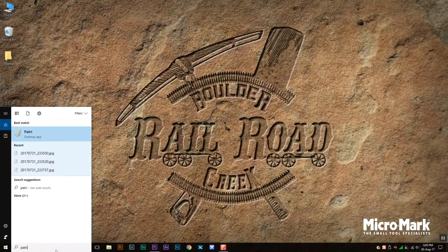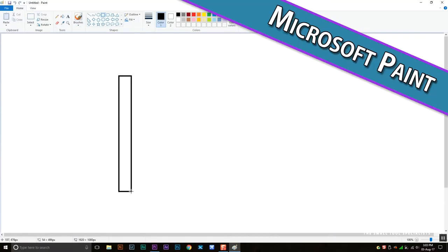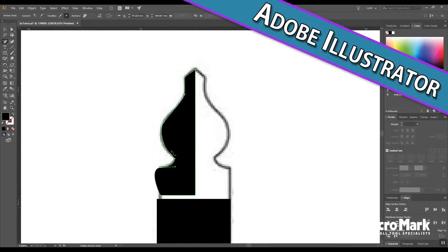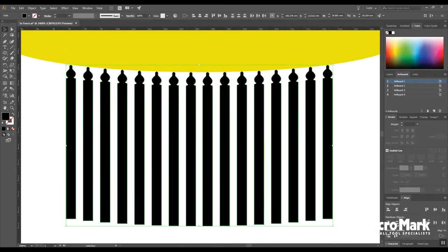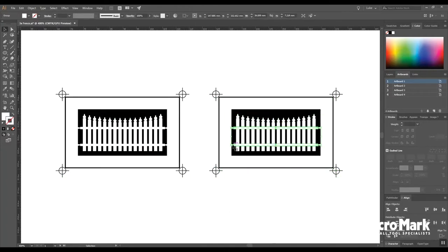The hardest part of this whole process is designing something to etch. At a bare minimum you can use a program like Microsoft Paint however if you use a program like Adobe Illustrator or something similar you'll be able to get much better designs. There's a bit of a learning curve to using a program like this but the results are definitely worth the time spent learning the program.